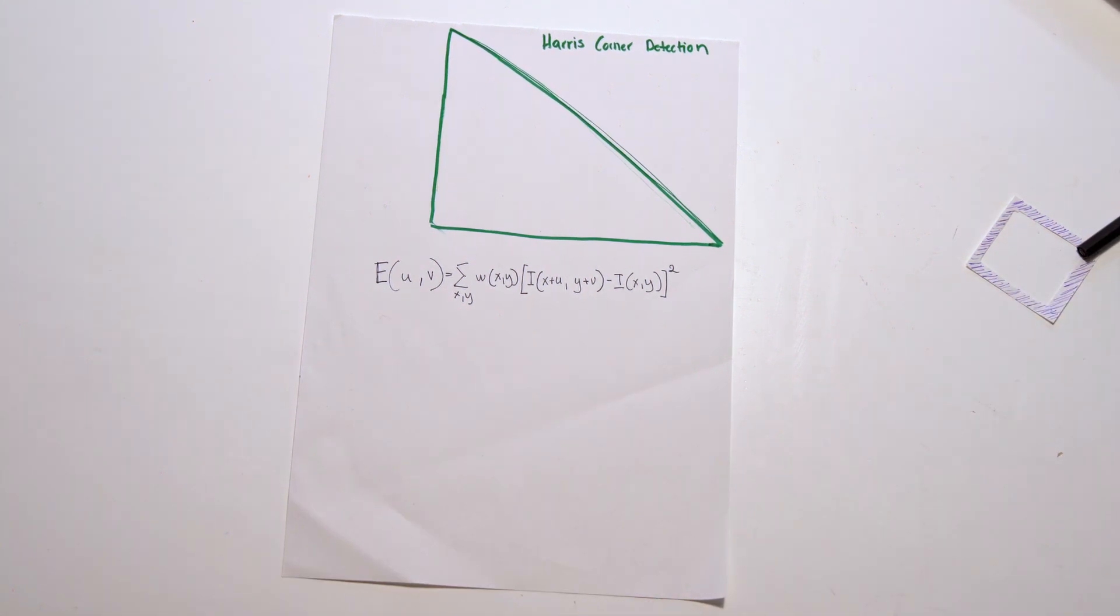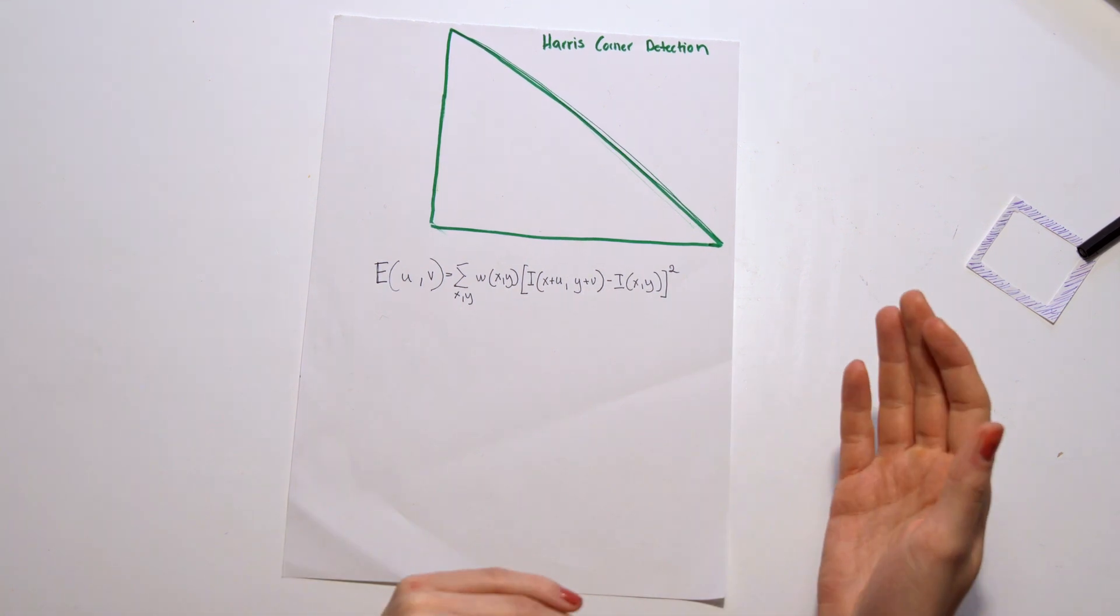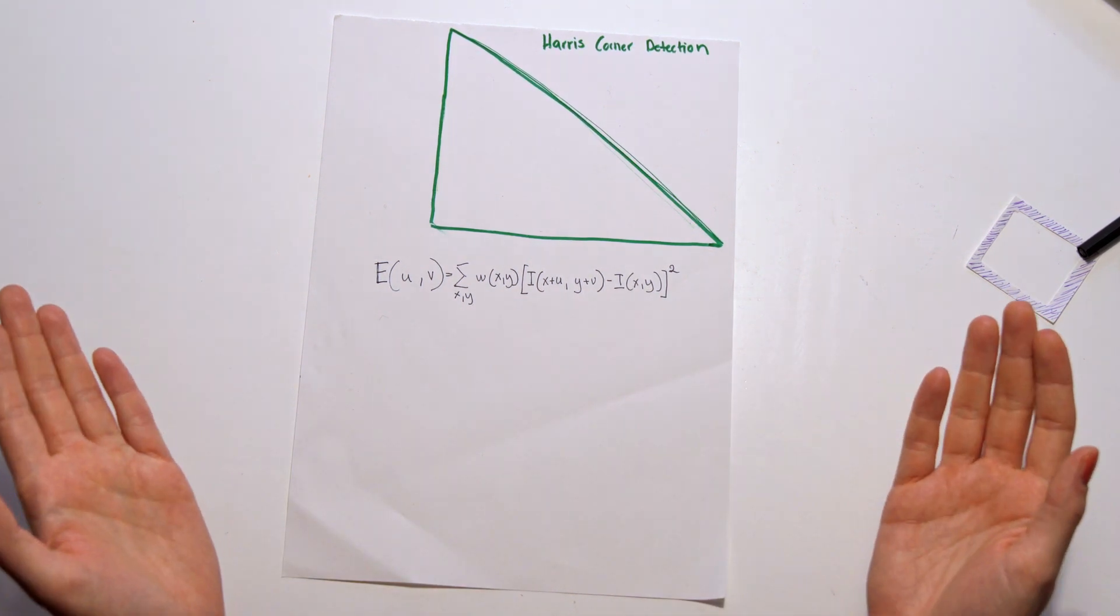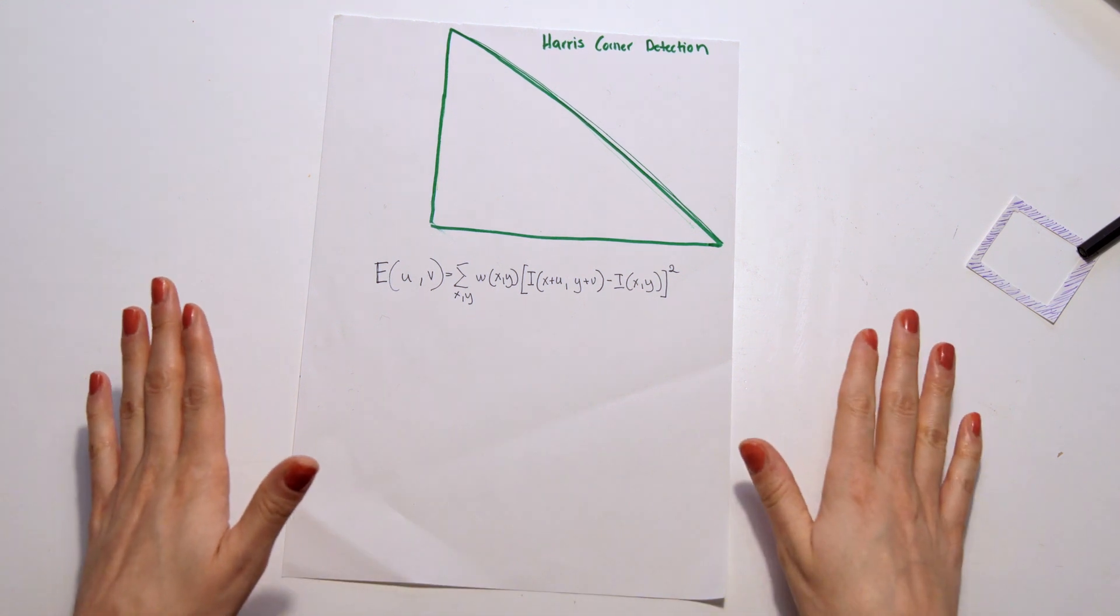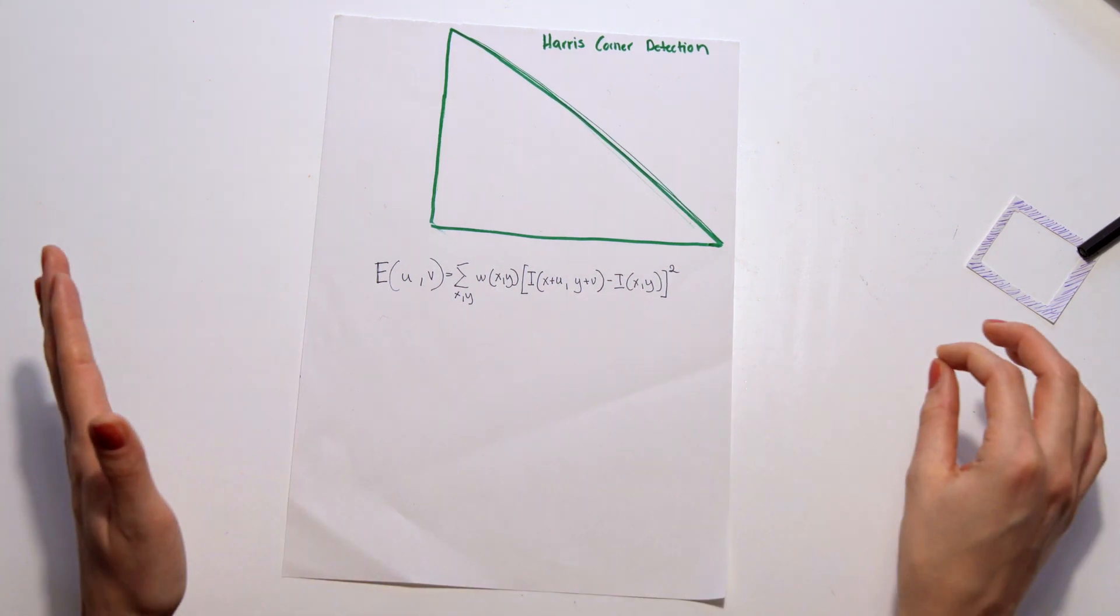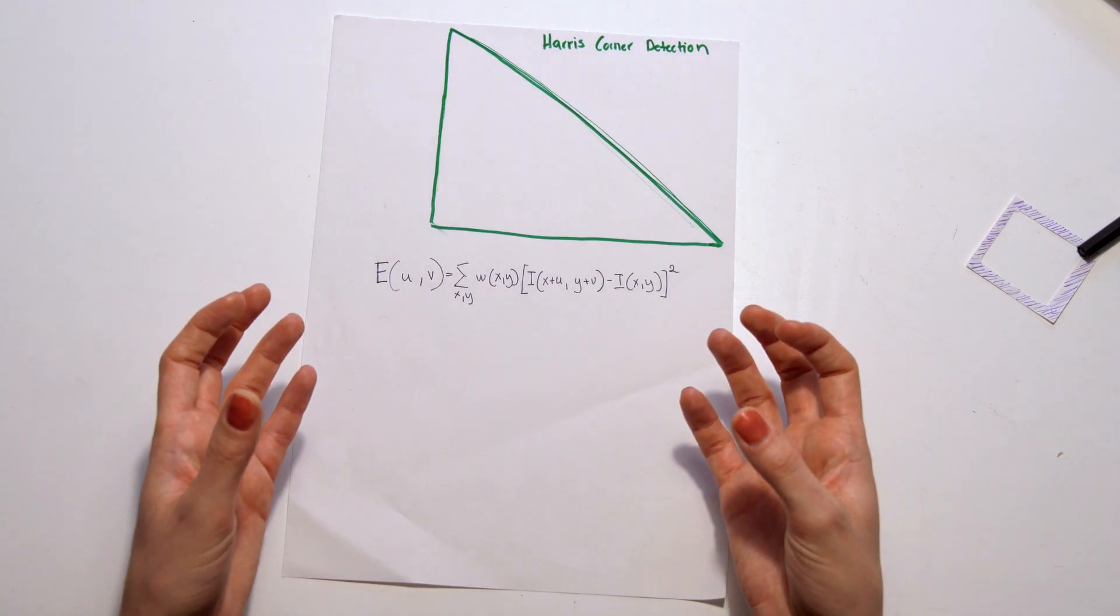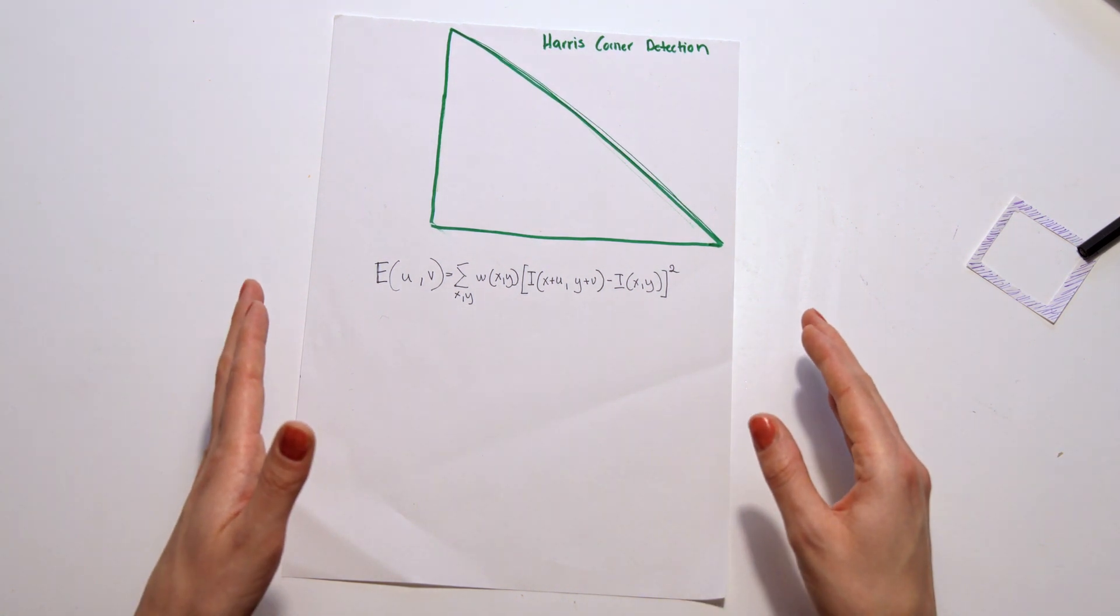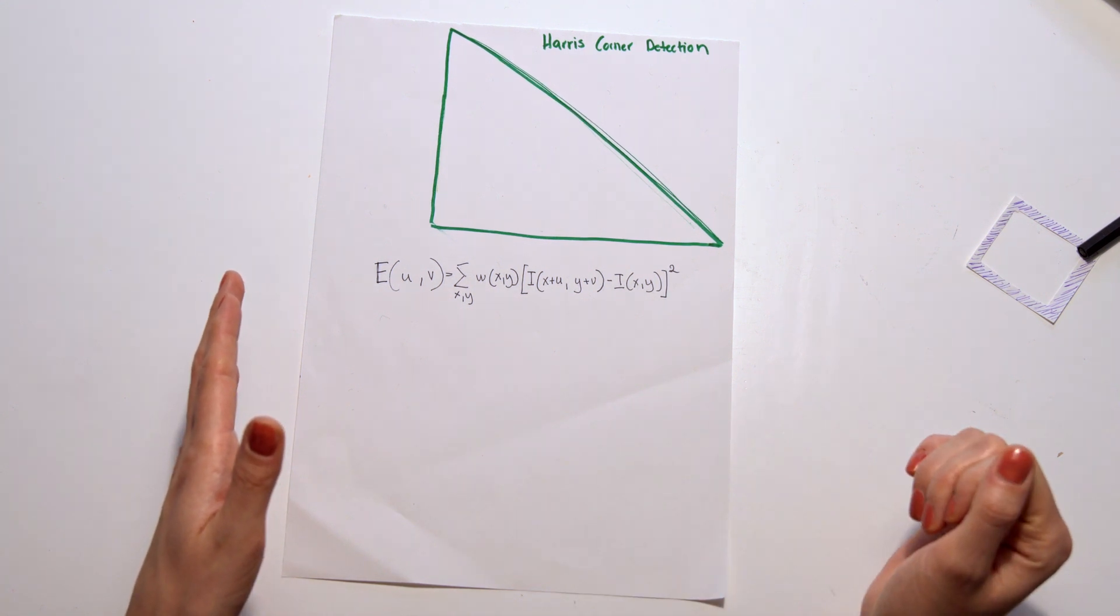So what you do instead in the Harris corner detection is that you build an approximation of this function. So if you remember from calculus, you can do this by using a Taylor series. So you create an estimate of a function. You can expand it for a very long series, which will give you a more accurate approximation of the function, but we will just do it basically with the first step approximation.